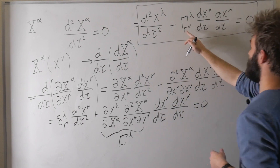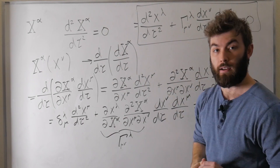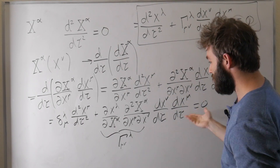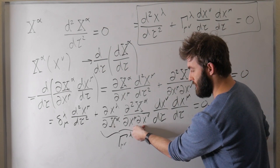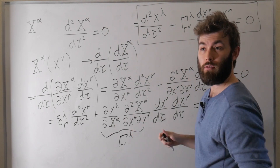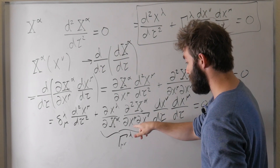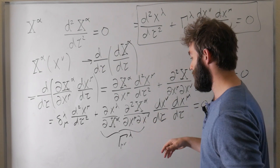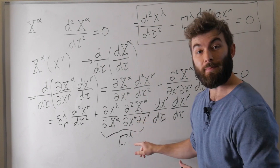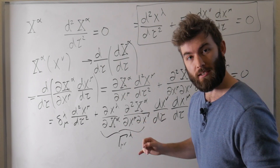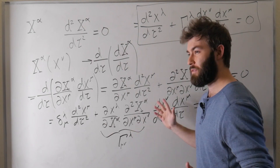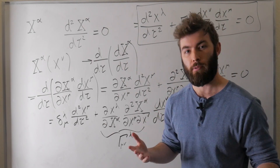This object Γ lambda mu nu is called the affine connection. Under usual circumstances, it doesn't matter which order we take derivatives — derivatives commute with each other. Theories where you can't make that assumption are said to have torsion. For the foreseeable future we won't be considering that, so we assume we can interchange derivatives, which tells us that Γ lambda mu nu is symmetric in the covariant indices mu and nu.